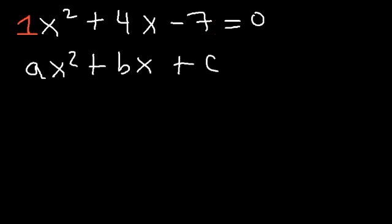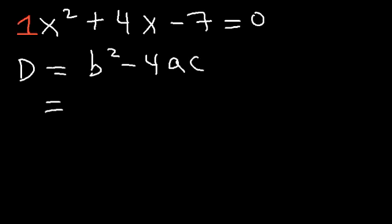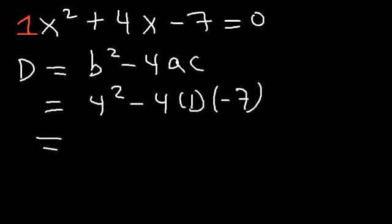Let's calculate the discriminant and then use the quadratic formula to get the solutions. So d is equal to b squared minus 4ac. b is 4, a is 1, and c is negative 7. 4 squared is 16, and negative 4 times 1 times negative 7 is positive 28. 16 plus 28 is 44.